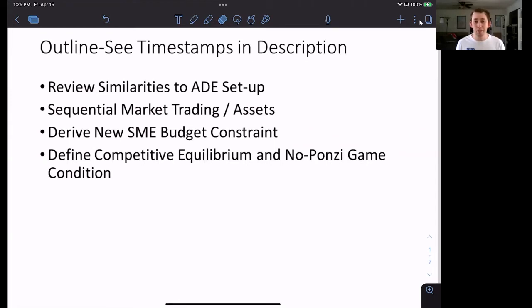In particular about this setup, we're going to talk about trading in the sequential markets equilibrium and assets. Then we are going to derive the budget constraint, which is going to be slightly new for the sequential market equilibrium.